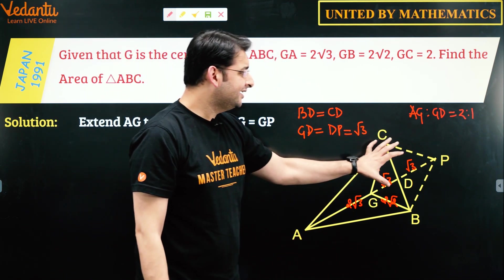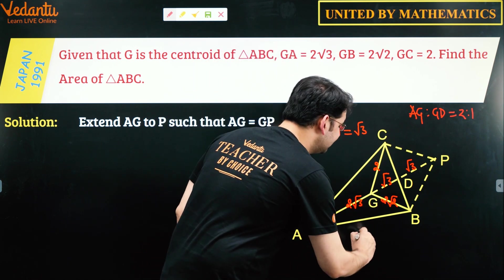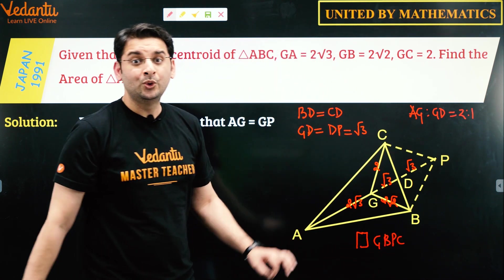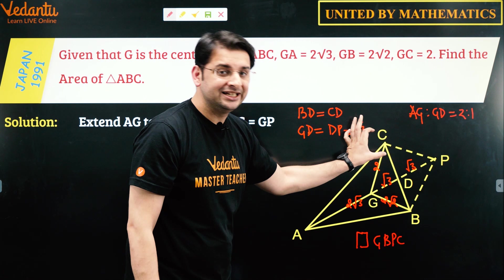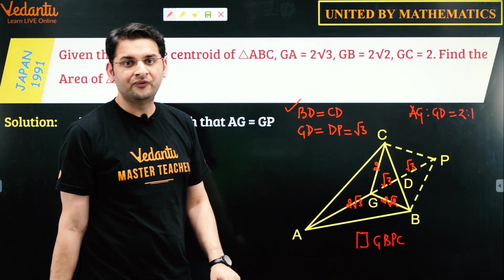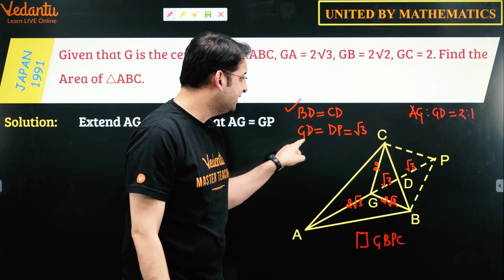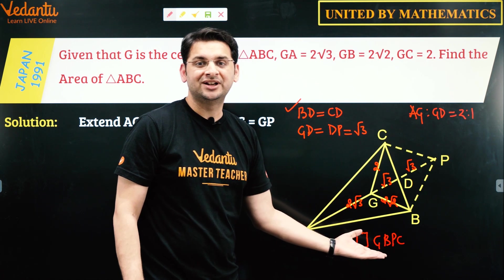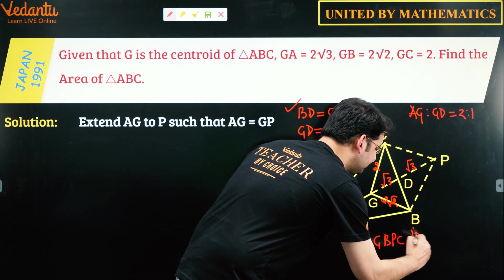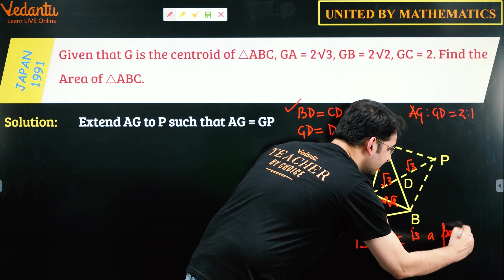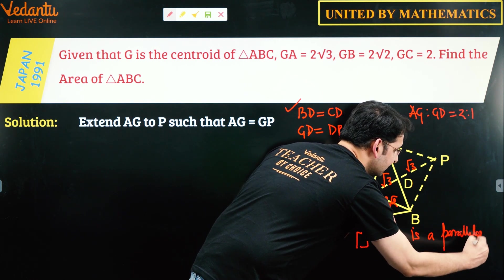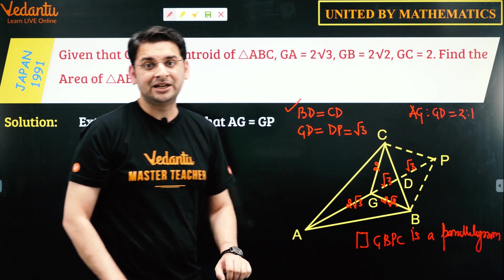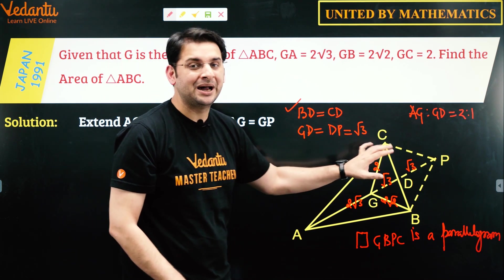Now consider this quadrilateral GBPC whose diagonals bisect each other because BD is equal to DC which is already obvious, and also we have proved that GD is equal to DP because both are equal to √3. So what does this tell us about this quadrilateral? That this is a parallelogram. Since the diagonals bisect each other, this is a parallelogram.